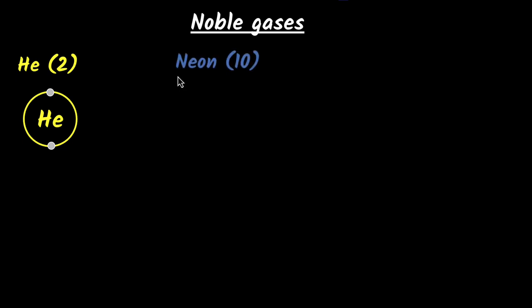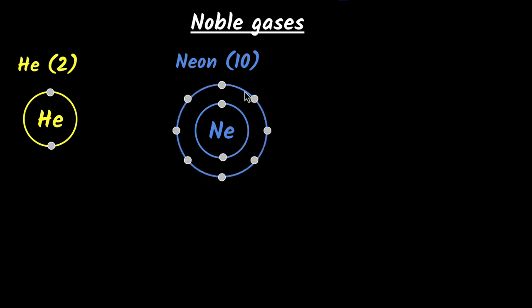What if you considered neon, the next noble gas? It has 10 electrons. The first shell contains two electrons because that's the maximum capacity of the first shell. Then if you go to the second shell, which is the L-shell, it has a capacity of eight electrons. So in neon, you have two in the K-shell and the next eight in the L-shell — that's the electronic configuration of neon: two and eight.